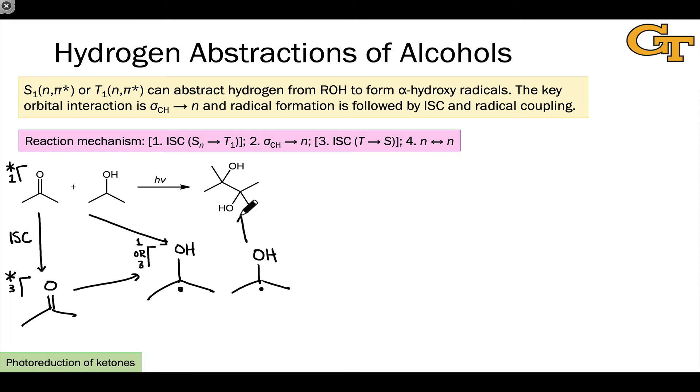If we're in a singlet state, radical-radical coupling, what I'm labeling here as n-to-n orbital interaction, can take us directly to the pinacol product. If we're in a triplet state, then we need to do intersystem crossing before that coupling can take place.